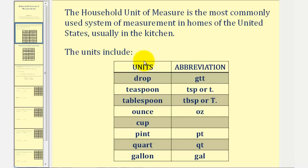The units are given here on the left with their abbreviations on the right. We have a drop, teaspoon, tablespoon, fluid ounce, cup, pint, quart, and gallon.